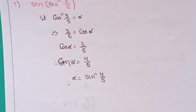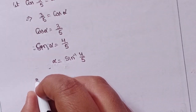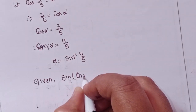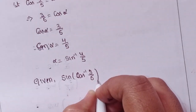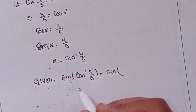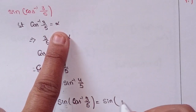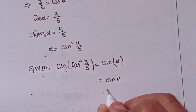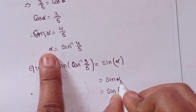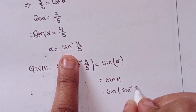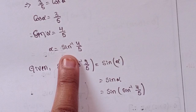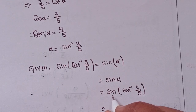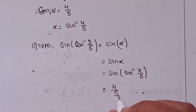Coming to the problem: sin of cos inverse 3 by 5 equals sin of alpha. Alpha means sin inverse 4 by 5, so sin of sin inverse 4 by 5. The sin and sin inverse cancel, giving 4 by 5 as the solution.